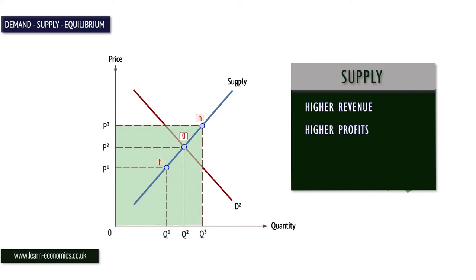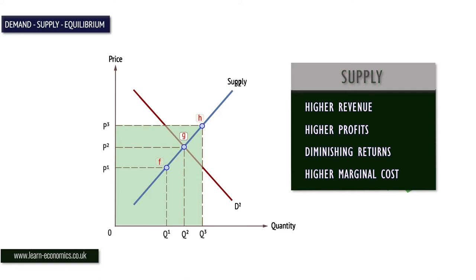Also, the marginal returns to higher output diminish and the marginal cost of production increases, hence a higher price is required to encourage output.